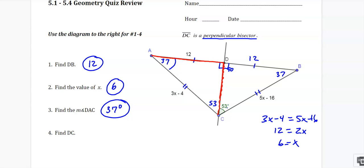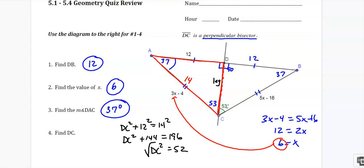Let's focus on this right triangle right here. We can find out the hypotenuse by plugging that 6 in. So 3 times 6 is 18, take away 4 is 14. So we know the hypotenuse, we know a leg, we are missing this leg here in the center. So leg squared plus the other leg squared equals the hypotenuse squared. DC squared plus 144 equals 196, which means DC squared is 52. Square root both sides. That's going to give us an answer of like 7.2-ish.